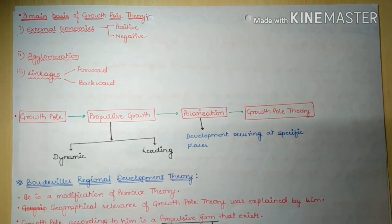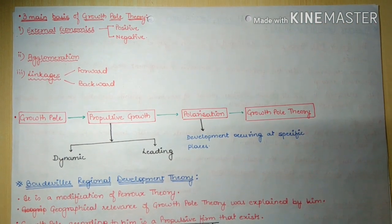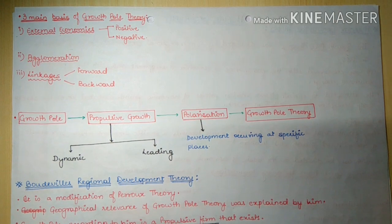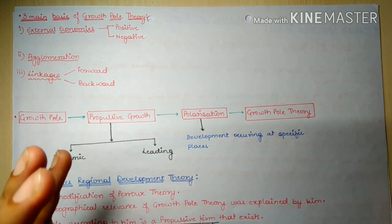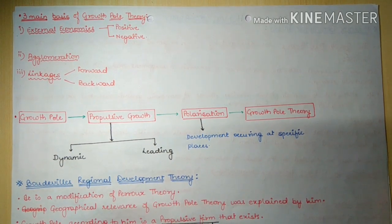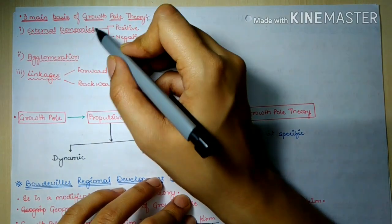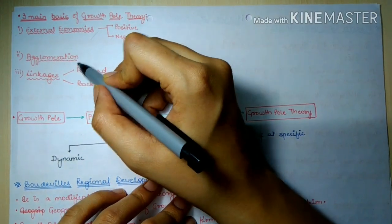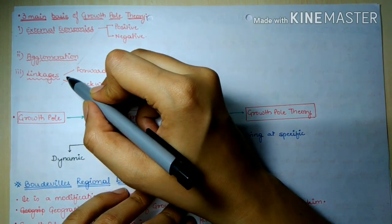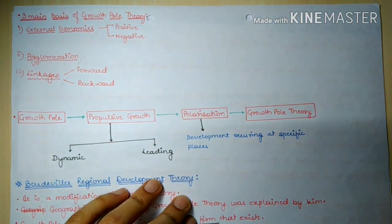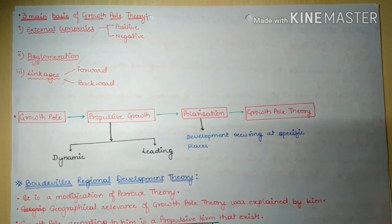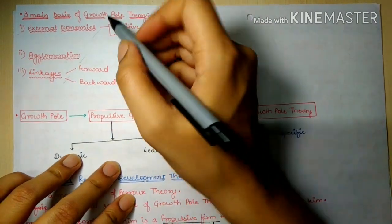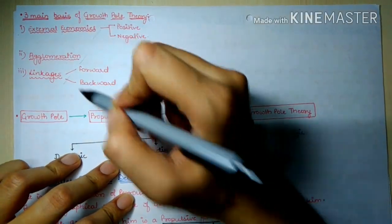Now we will look at the three main factors of growth pole theory: external economies, agglomeration, and linkages.